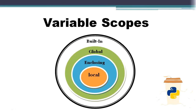Now what's an enclosing scope? An enclosing scope occurs when we have nested functions. When the variable is in the scope of the outside function, it means that the variable is in the enclosing scope of the function. Therefore the variable is visible within the scope of the inner and outer functions.